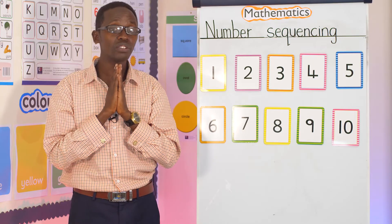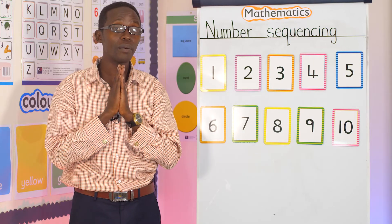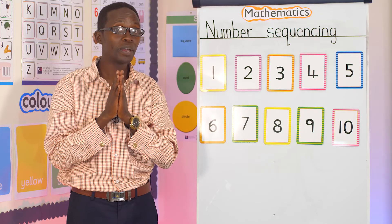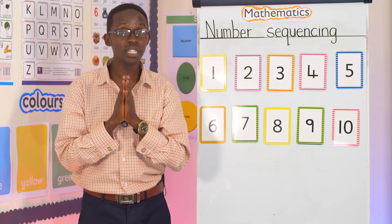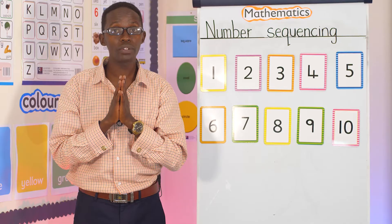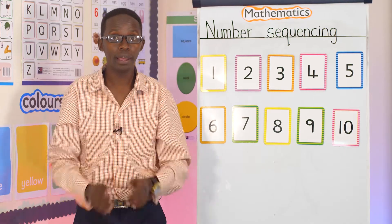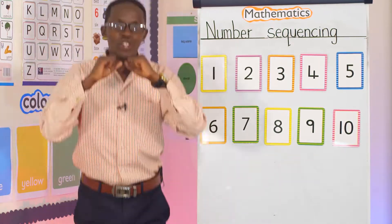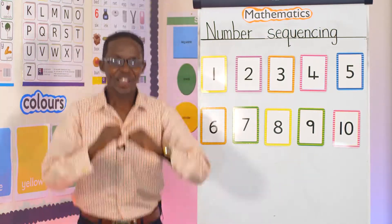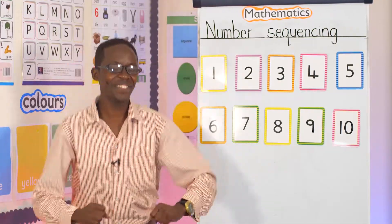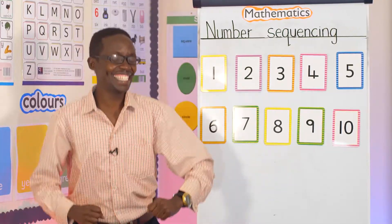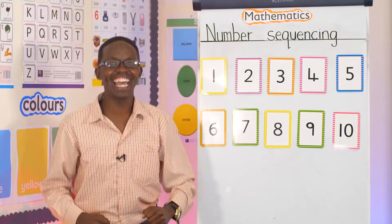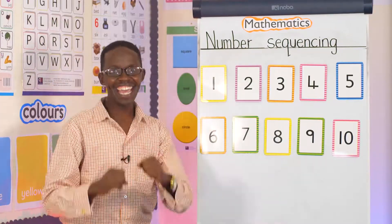I want us to — do you know how to jump, number one to ten? Can you be able to jump? Look at me jumping, number one to ten. One, two, three, four, five, six, seven, eight, nine, ten.